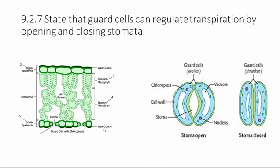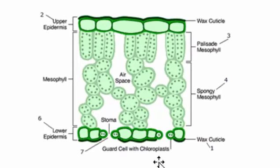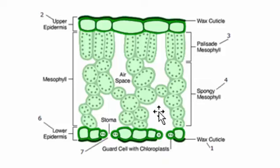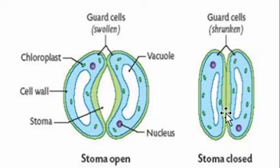9.2.7 says state that guard cells can regulate transpiration by opening and closing stomata. When the stomata — the holes on the bottom of the leaves — are open, gases like carbon dioxide can come in but water can also escape. When guard cells take in water they swell and the stomata opens; when water flows out, the vacuoles become smaller, the guard cells shrink, and the stomata closes.